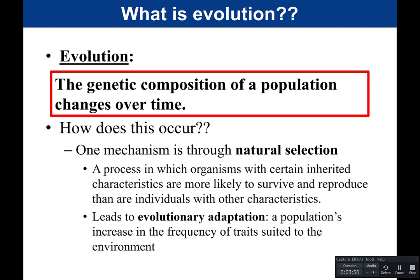How does evolution occur? One mechanism is natural selection — a process in which organisms with certain inherited characteristics are more likely to survive and reproduce than individuals with other characteristics. As a result, beneficial adaptations become more common in the next generation. When you think about natural selection, you often hear 'survival of the fittest,' but it's actually more complex — it's not just survival that's important, but reproduction. Organisms have to reproduce to pass those traits on with greater frequency in the next generation.